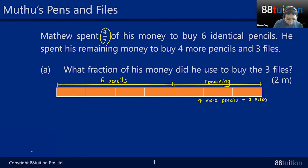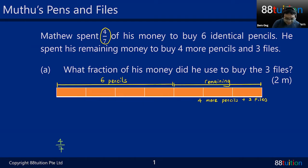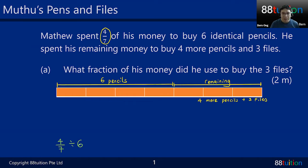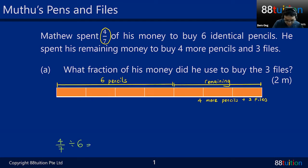Down here: four out of seven of the money was used to spend on six pencils. Can I find out how much one pencil costs? Yes — four over seven distributed among six pencils gives the fraction representing one pencil.